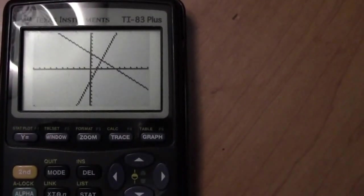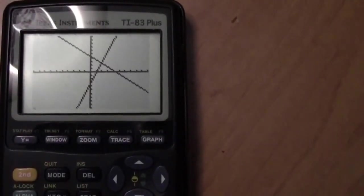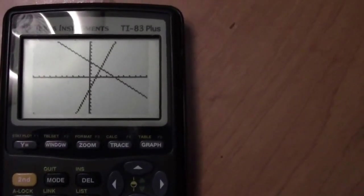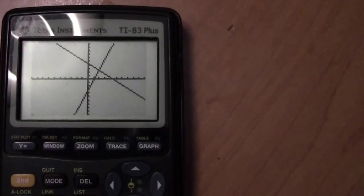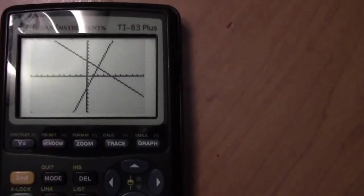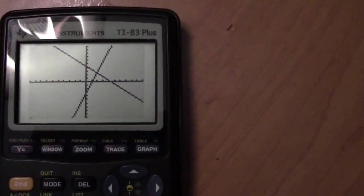As long as the intersection happens on the screen, you're going to be able to see where the intersection falls. Now in order to do that, you need to calculate where that's found.